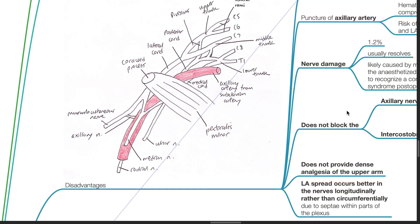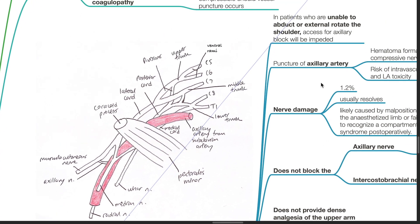Disadvantages of the axillary block. In patients who are unable to abduct or externally rotate the shoulder, access for the axillary block will be impeded.